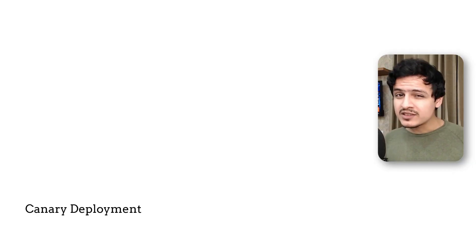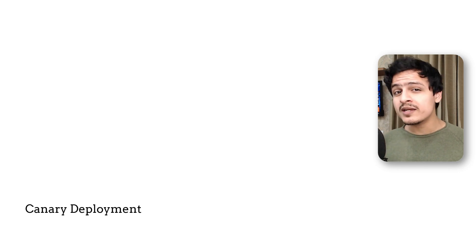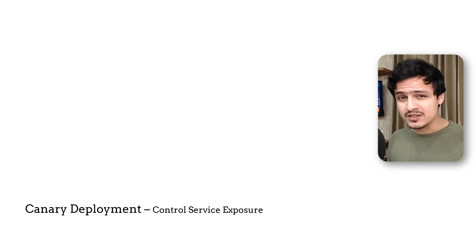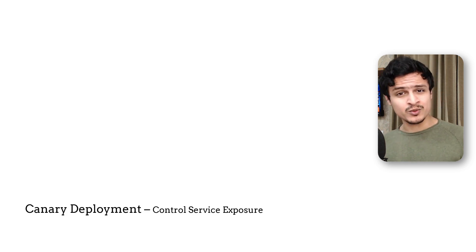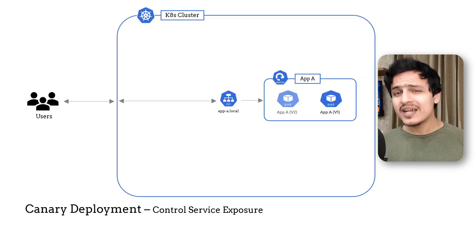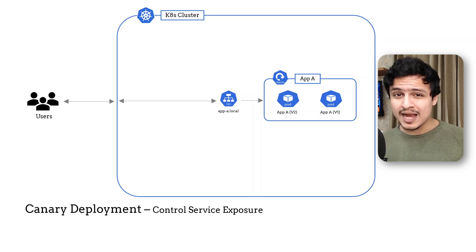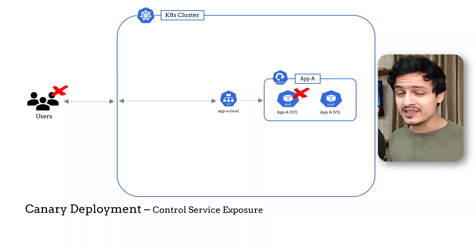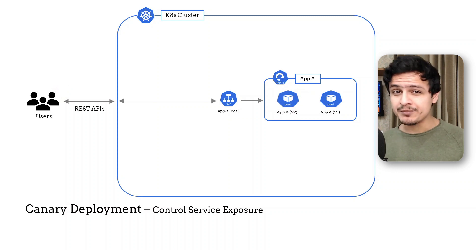So why not do the same with our microservices? To adapt the shower testing mechanism to our microservices we need to consider two fundamental components. The first is the ability to control service exposure. This limits the damage radius — when you deploy a new version that happens to have bugs, you don't want all your end users to be affected. If you come from the world of RESTful APIs, this can be achieved by controlling incoming traffic.